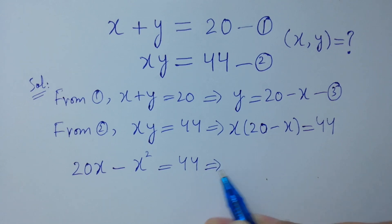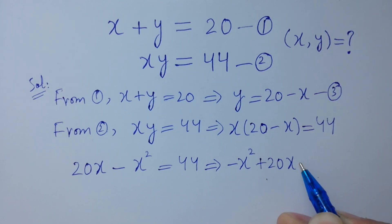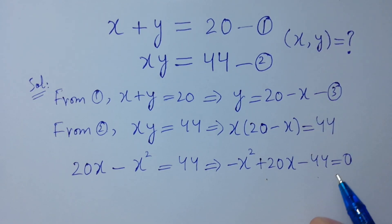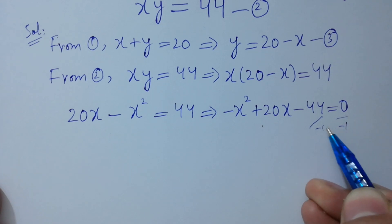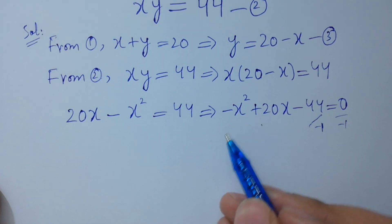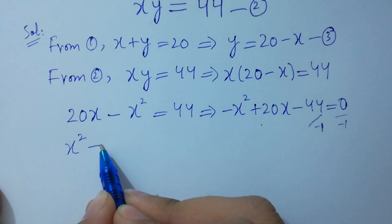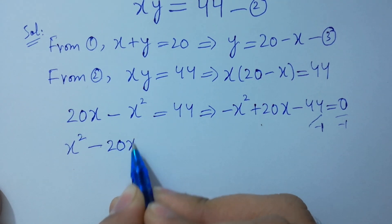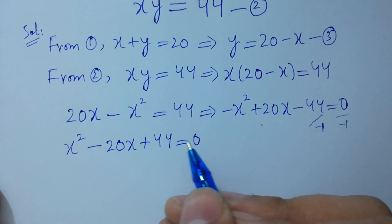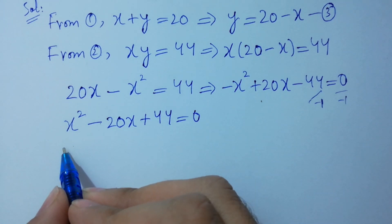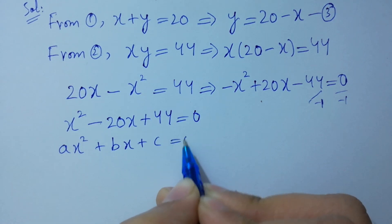So we have minus x squared plus 20x minus 44 equal to 0. Dividing by minus on both sides, we get x squared minus 20x plus 44 equal to 0. This is like the quadratic equation ax squared plus bx plus c equal to 0.